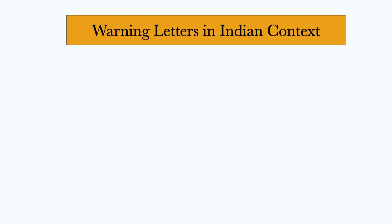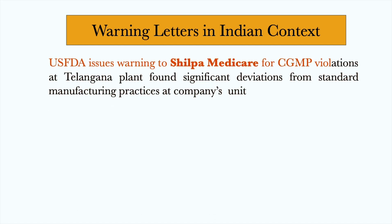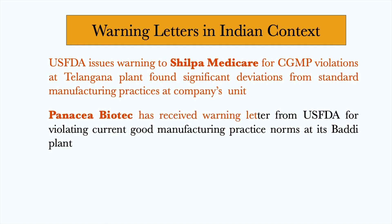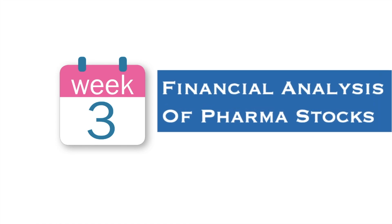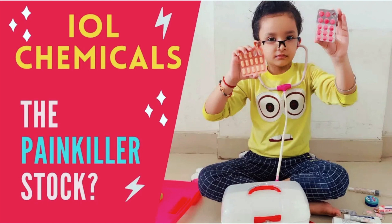USFDA issued a warning letter to Silpa Medicare for CGMP violations. Panacea Biotec also received a warning letter for the same reason, and Forma Life Science was given OAI status before their US facility received a warning letter. This shows that USFDA is quite active and vigilant while going after contract manufacturers, API manufacturers, or formulation manufacturers. This is the background in which the Indian and US pharmaceutical industries work. Next week, we will talk about the financial aspects of this industry. If you have basic knowledge about the pharmaceutical industry, you will be able to make better investment decisions about these stocks.